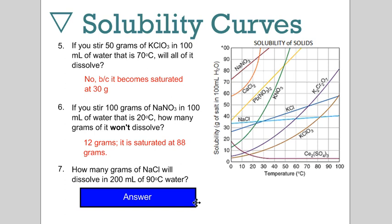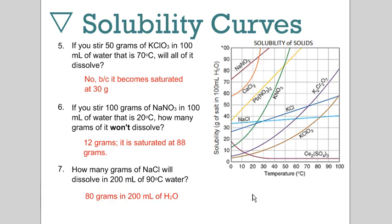Number seven, how many grams of sodium chloride will dissolve in 200 mils of 90 degrees Celsius water? At 90 Celsius, sodium chloride - this light blue line - dissolves about 40 grams per 100 grams of water. So how many grams dissolve in 200 mils at this temperature? It would be double that value, so 80 grams.